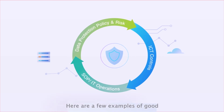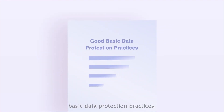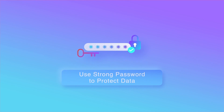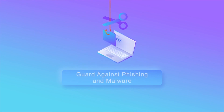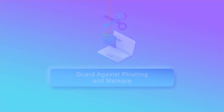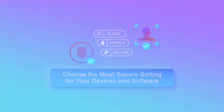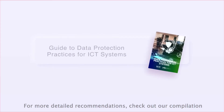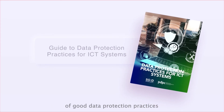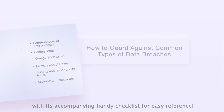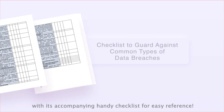Here are a few examples of good basic data protection practices: Control access to your data and services. Use strong passwords to protect data. Guard against phishing and malware. Choose the most secure setting for your devices and software. For more detailed recommendations, check out our compilation of good data protection practices for your ICT systems, and our handbook on how to guard against common types of data breaches with its accompanying handy checklist for easy reference.